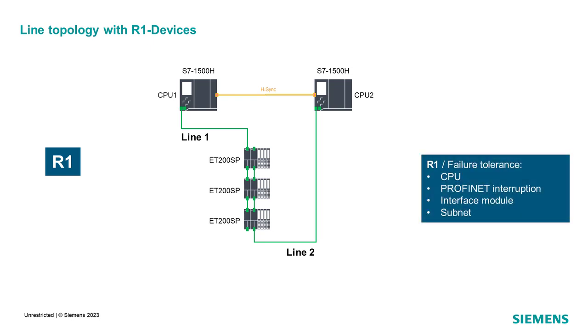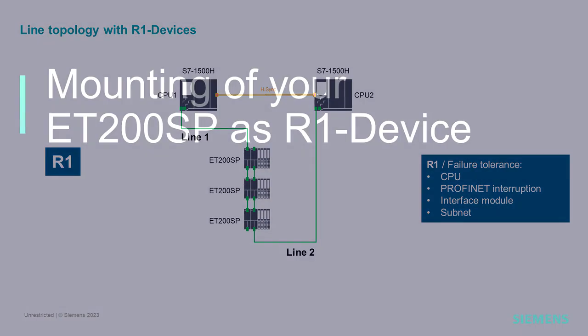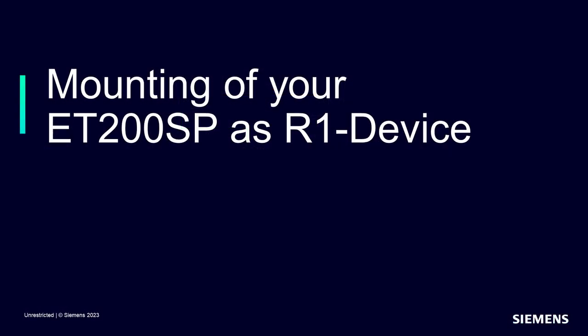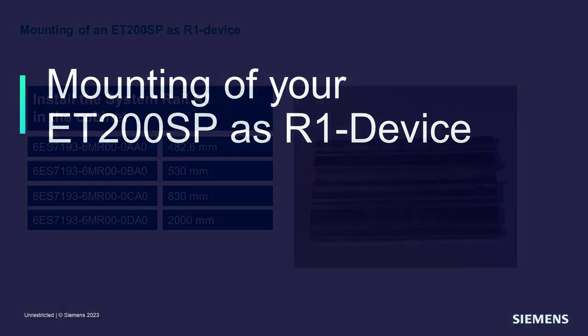This solution can tolerate a CPU failure, PROFINET line interruption, as well as an interface module or subnet failure. Let us show you the mounting of an ET200SP station as an R1 device.